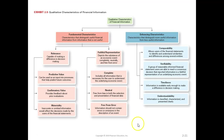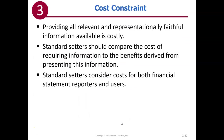There's a nice summary picture of all the characteristics in your textbook — fundamental and enhancing. Maybe put a tab on that page so you can refer to it as necessary. When we want all these qualitative characteristics — relevant, faithfully representative, timely, comparable — there is a limit: we can only provide information to the extent that it is cost-beneficial. The cost of providing information must be weighed against the benefit of providing it.